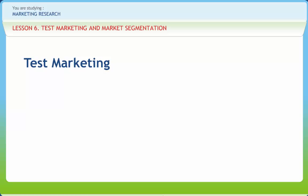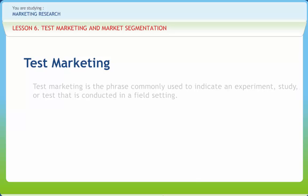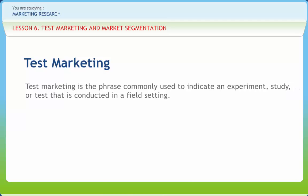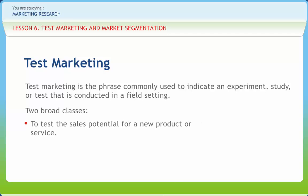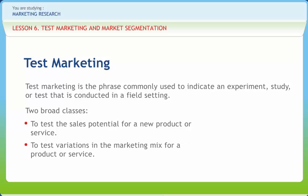The ultimate way to test a new consumer product is to put it into full-blown test markets. The company chooses a few representative cities and the sales force tries to sell the trade on carrying the product and giving it good shelf exposure, full advertising and promotional strategy, similar to the one used in the home market. Test marketing is the phrase commonly used to indicate an experiment, study or test that is conducted in a field setting. Two broad classes of test marketing are to test the sales potential for a new product or service and to test variations in the marketing mix for a product or service.